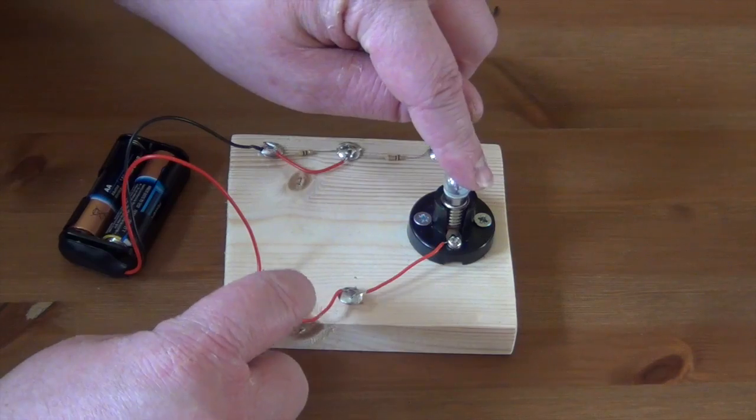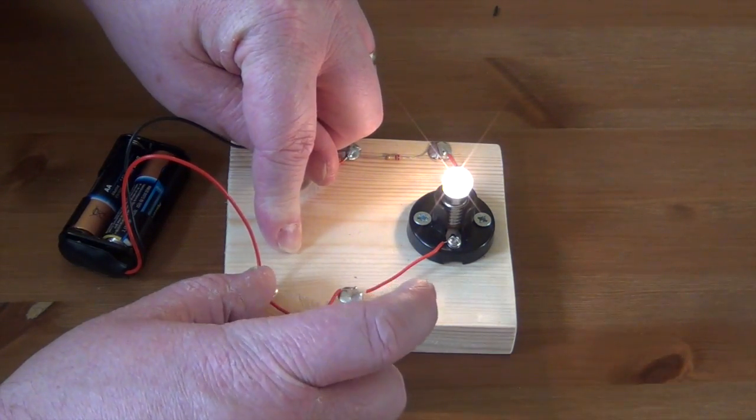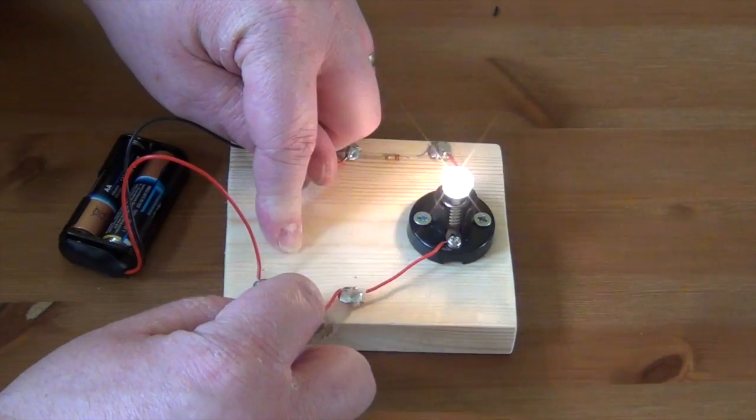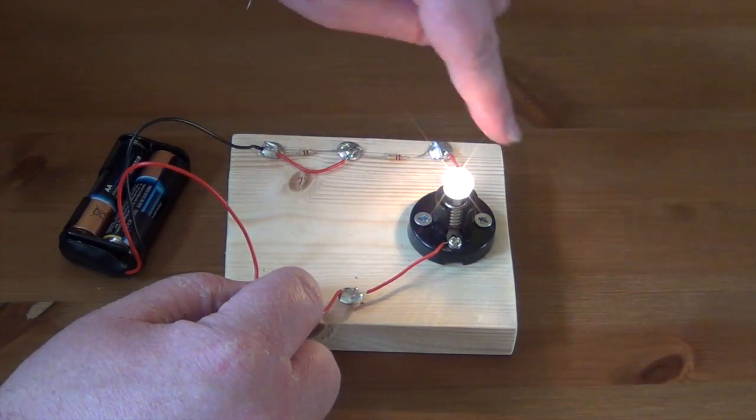Batteries connected, everything's wired in, put the bulb in and we'll just attach the strap there to the switch. And there we go. We can now see that we've got a full circuit.